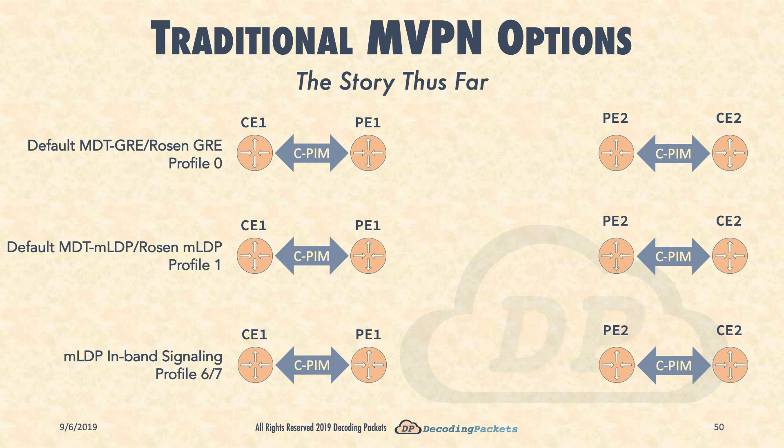Before we go headfirst into the topic, let's quickly recap the options we have covered so far. All in all we have covered three major options, known in Cisco land as Profile 0, Profile 1, and Profile 6 or 7. Any MVPN solution, also known as a profile, must describe at least three major mechanisms.